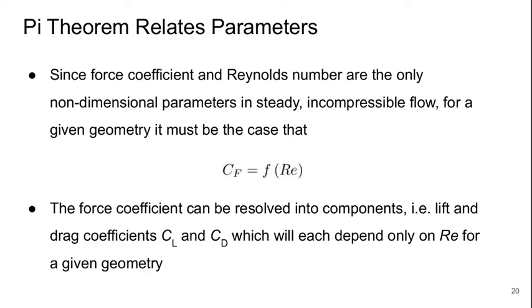So, the Buckingham Pi theorem allows us to relate these two parameters. Since the force coefficient and the Reynolds number are the only non-dimensional parameters in steady, incompressible flow, for a given geometry, it must be the case that the force coefficient is purely a function of Reynolds number. Now, we can resolve that force coefficient into components, for example, lift and drag coefficients, C L and C D, and each of those will depend only on Reynolds number for a given geometry.